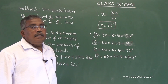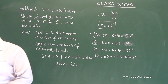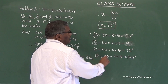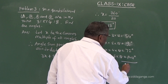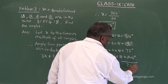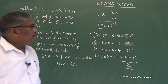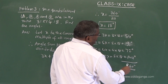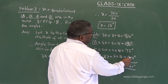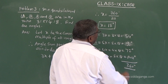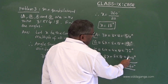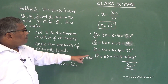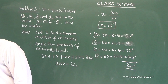Angle D equals 8x, which is 8 into 18, equals 144 degrees — just double angle C. You can verify: 54 plus 90 plus 72 plus 144 equals 360 degrees, confirming the angle sum property is satisfied. We have found all four angles.